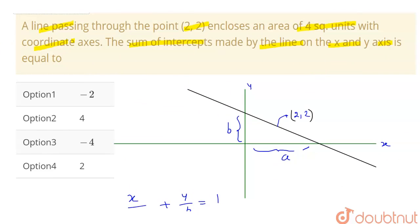See, for this we have given a condition. What condition? That area enclosed by this line is 4 square units with the coordinate axis. So, it means we have given this area of this triangle.